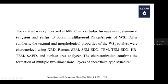We synthesized the catalysts with a very simple process: using elemental tungsten and sulfur at 600°C in a tubular furnace, and we obtained multi-layer flake sheets of WS2. This method is very simple compared to any other supported material synthesis method — we are only using elemental tungsten and sulfur as raw materials, kept inside the tubular furnace at 600°C. The advantage of these multi-layer flake sheets is that they have a large surface area compared to any supported catalyst.